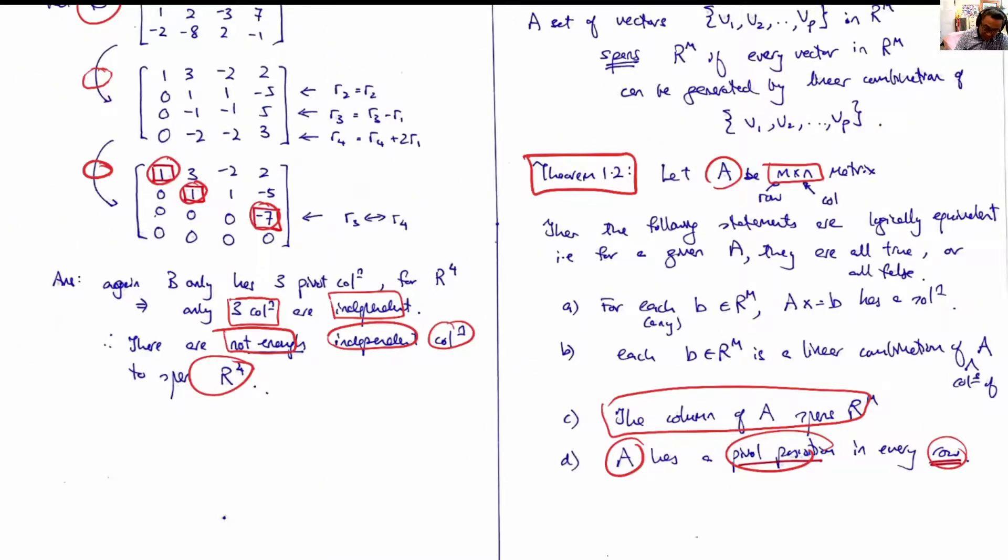So in this example, we have a 4 by 4. Although there are four rows, it only has three pivots, so this is not true. Therefore, the columns of A do not span R^m—do not span R^4.